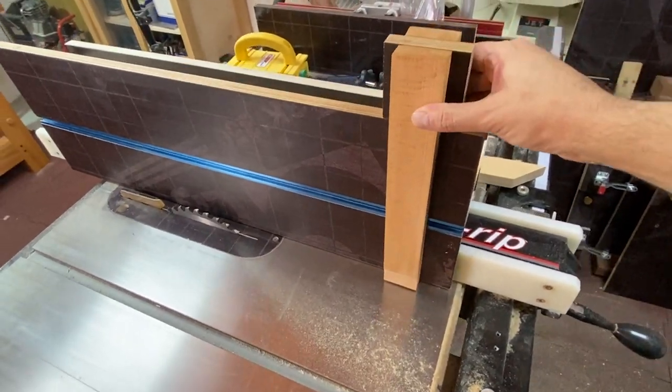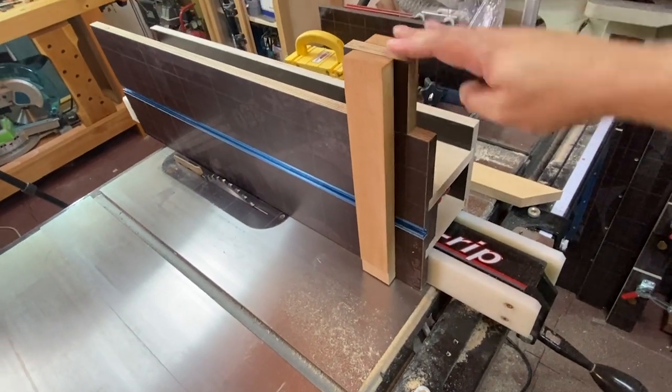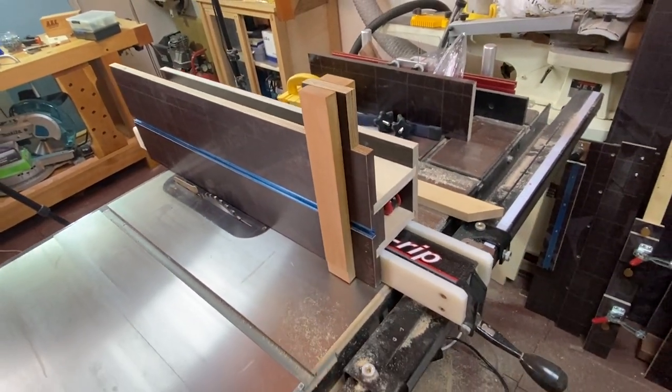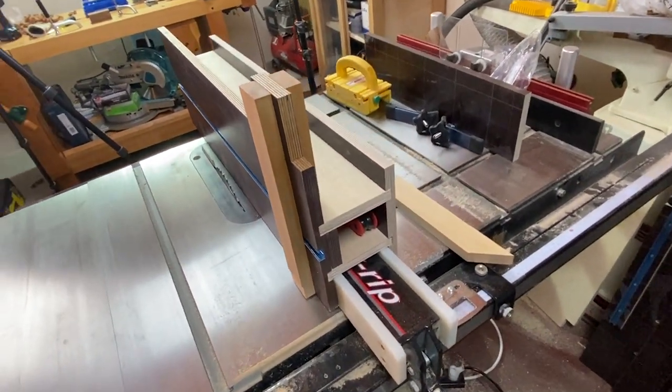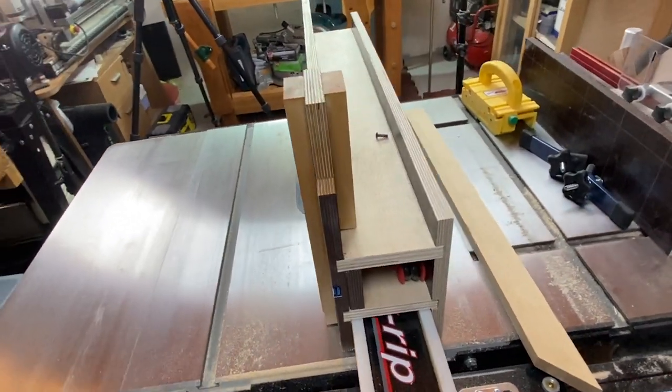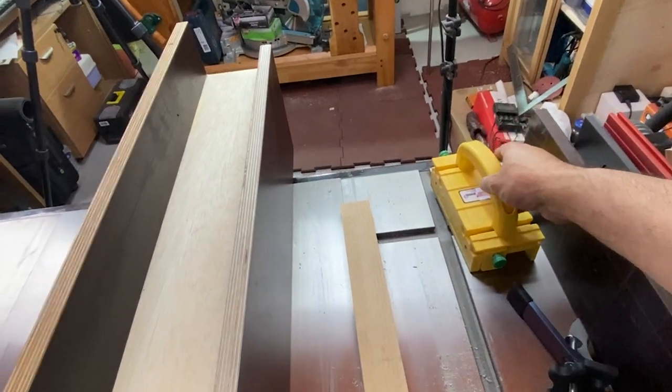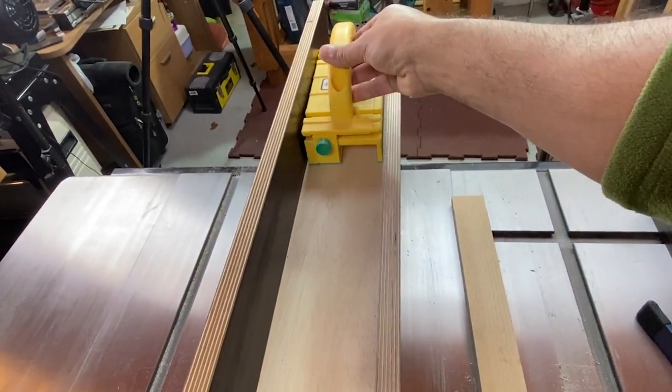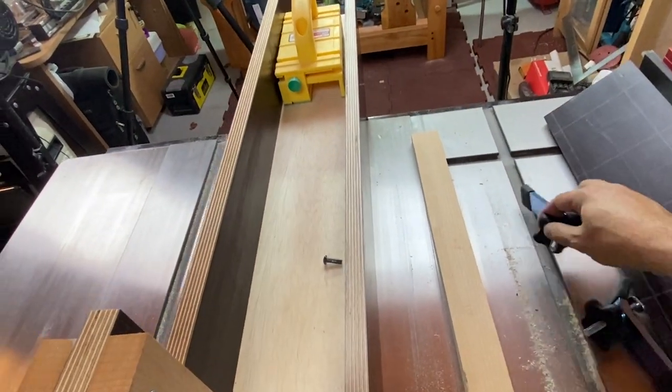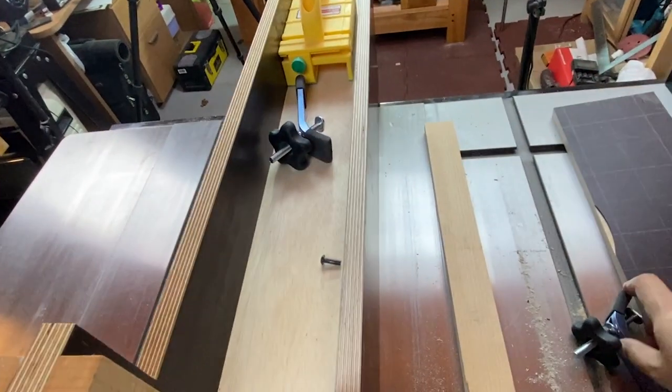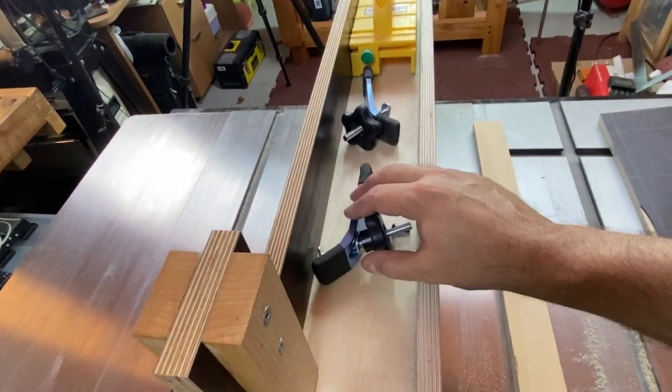The space above and inside the fence can be used as a storage compartment to store push sticks, allen keys, or any other items you need nearby your table saw. Finally, there are many auxiliary fence designs out there. You can choose which one works best for you and build it for yourself. Then you will discover how handy it can be.